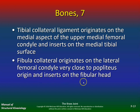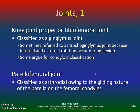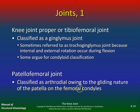The fibular collateral ligament originates on the lateral femoral condyle very close to the popliteus, and inserts on the fibular head. The knee joint proper — the tibiofemoral joint — is classified as a ginglymus joint, sometimes referred to as a trochoginglimus joint because internal and external rotation occurs during flexion. Some argue for the condyloid classification, but for test purposes we'll call it a ginglymus joint. The patellofemoral joint is classified as arthrodial owing to the gliding nature of the patella on the femoral condyle. As you bend your knee, your kneecap should glide inferior; as you extend, the patella should glide superior.